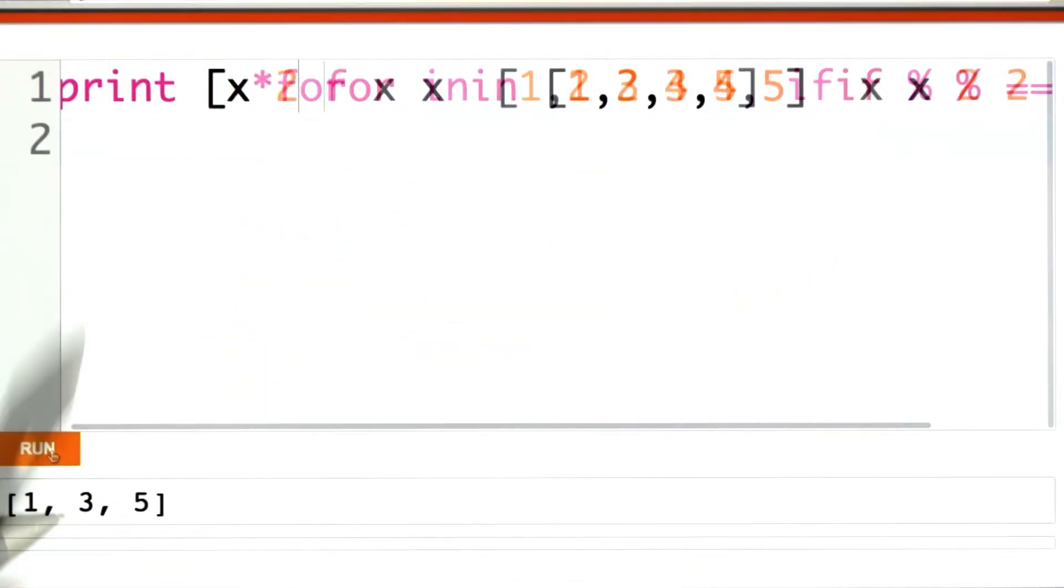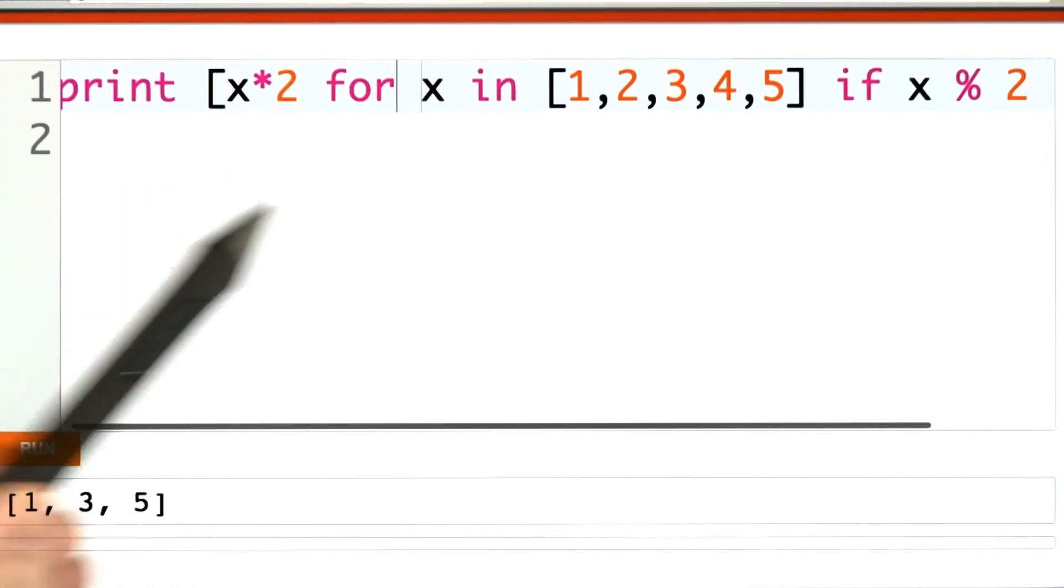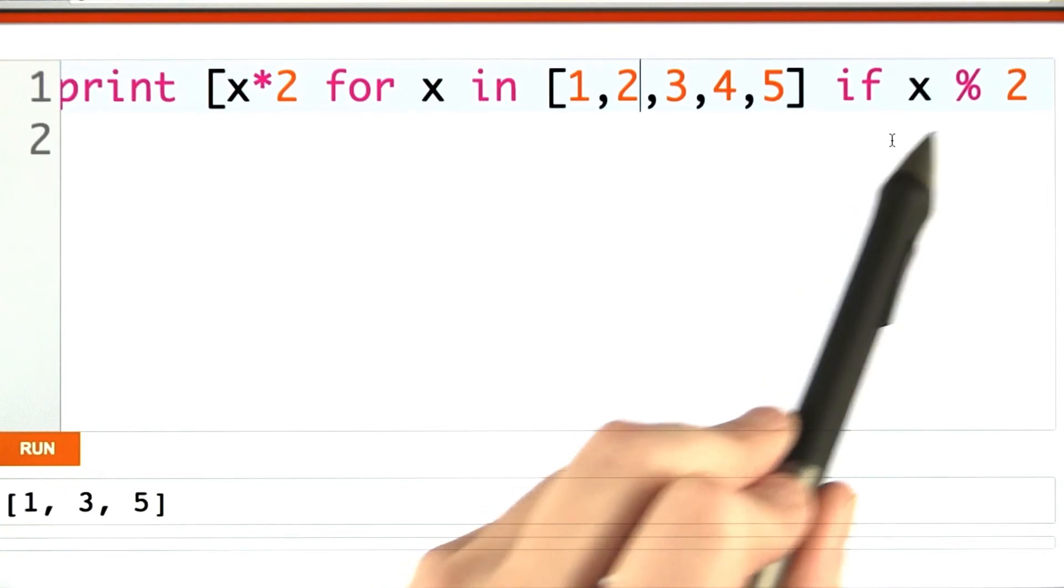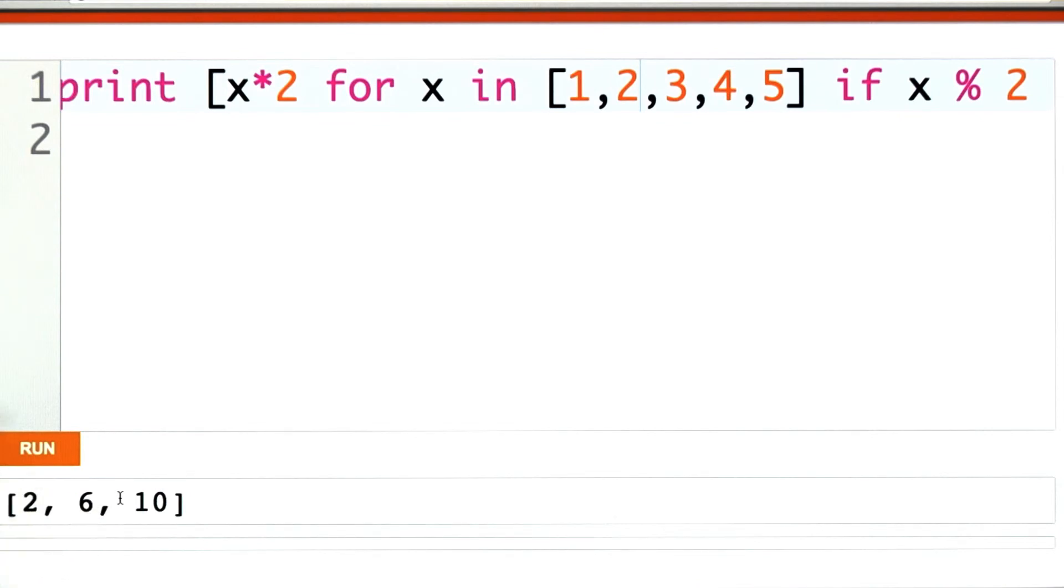And look, we get the answer we wanted. I've written x a few times, but I can make these formulas arbitrarily more complicated. Here I've said take all of the odd numbers and multiply them by 2. Since 1, 3, and 5 were the odd numbers, 2, 6, and 10 are the multiplication by 2. I love list comprehensions and you will too soon.